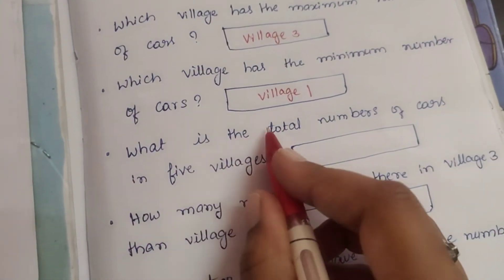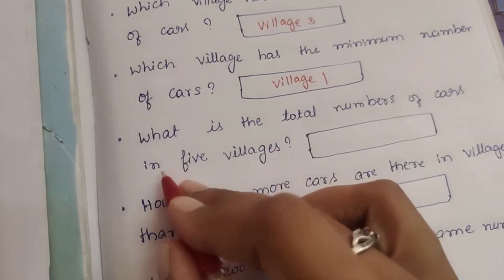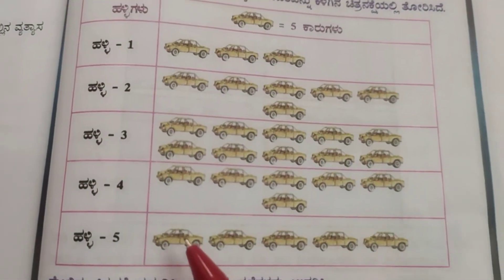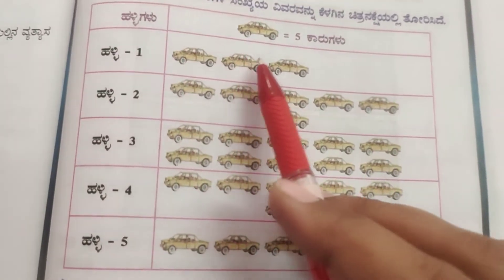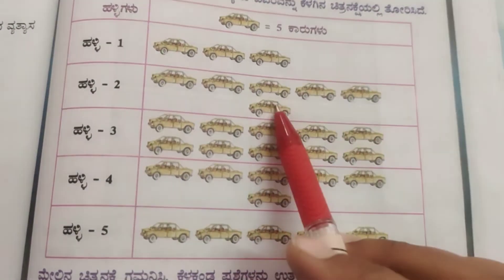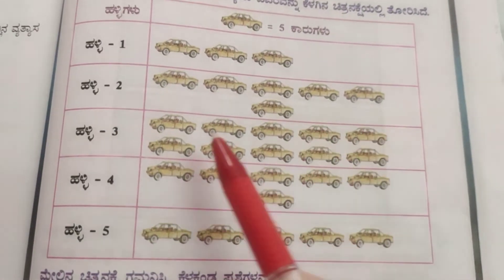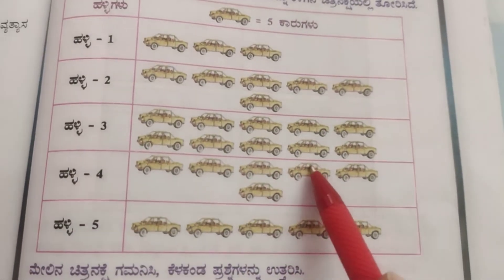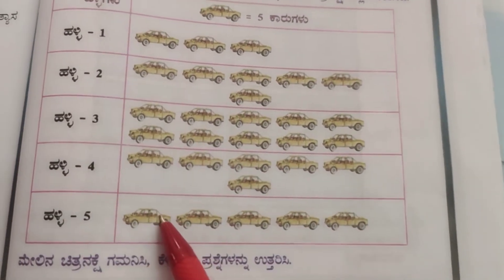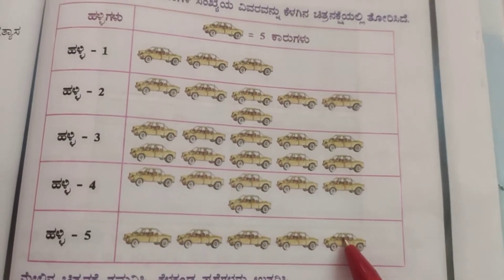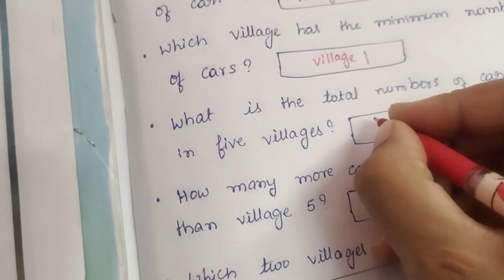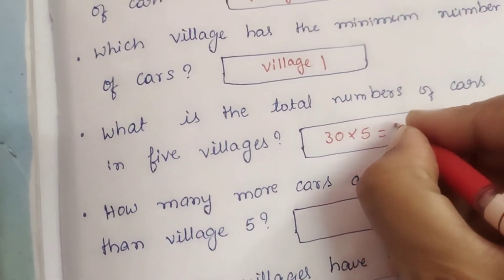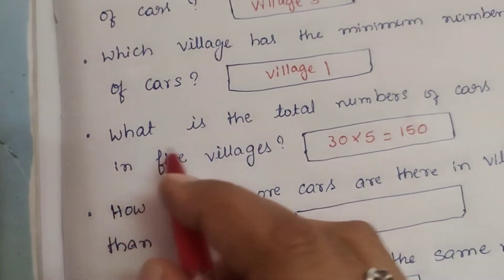Next question: What is the total number of cars in five villages? Counting all pictures across all villages gives 30 total pictures. 30 times 5 equals 150 cars total. For the next question comparing Village 3 and Village 5, Village 3 has 50 cars and Village 5 has 25 cars, so the difference is 25 more cars in Village 3.